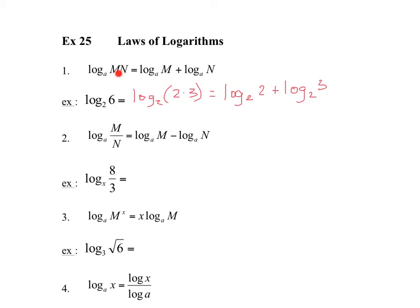The second law is related to the first: if you have a product you make a sum of logarithms, and if you have a quotient it becomes a subtraction. So for example, log base x of 8 over 3 can be changed into the difference: log base x of 8 minus log base x of 3.